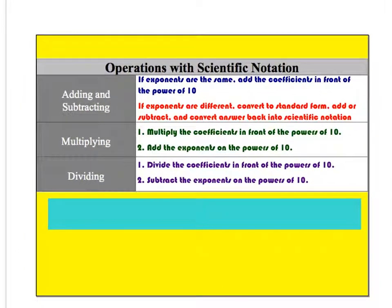So operations of scientific notation. Adding and subtracting: if exponents are the same, easy, add the coefficients. If exponents are different you have to convert to standard form, add or subtract, and then convert back to scientific notation. Multiplying: multiply the coefficients and add the exponents. Divide: divide the coefficients and then subtract the exponents. So hit pause and make sure you got this down somewhere.